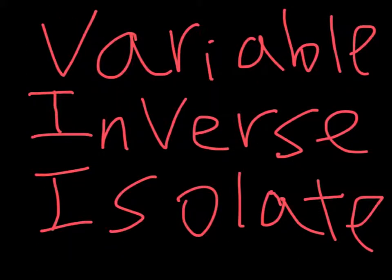Here are some vocabulary words you need to know. Variable: a letter that replaces a number, such as x, y, or a. Inverse means the opposite of something, like the inverse of plus is minus. Isolate means to make something be alone.